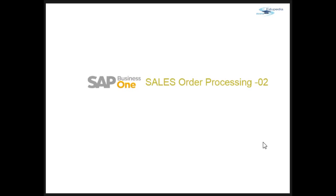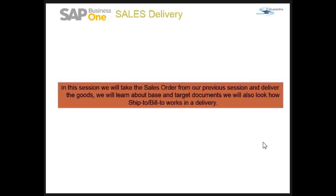We will continue with our sales order processing — this is part two of sales order processing. In this session, we will take the sales order from our previous session and deliver the goods. We will learn about the base document and the target documents, and also look at how the ship to and bill to work in a delivery.